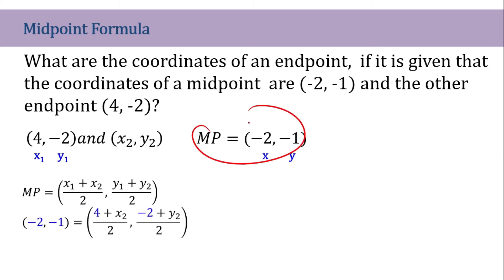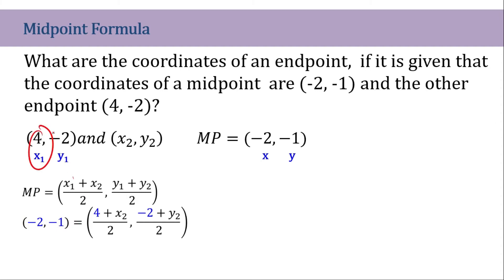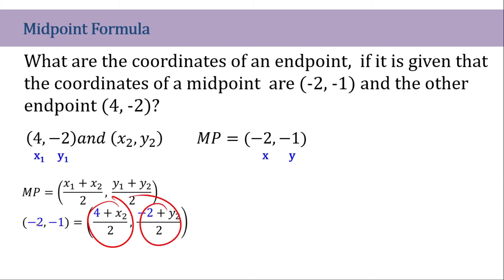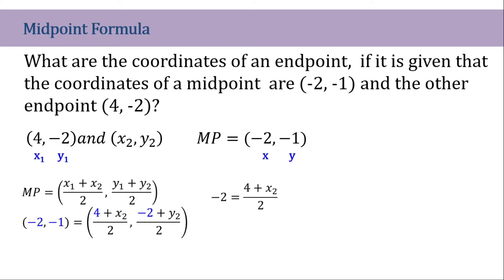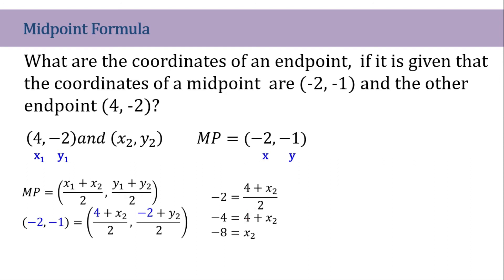We know that our midpoint is (negative 2, negative 1). This will be the x and this will be the y. Now let's substitute all the given: we have 4 plus x sub 2 and negative 2 plus y sub 2. We will separate the two coordinates and equate each. For x: we equate negative 2 to the x coordinate of the formula. To solve, let's multiply both sides by 2 — that gives us negative 4. Then subtract 4 on both sides, so x sub 2 is equal to negative 8.